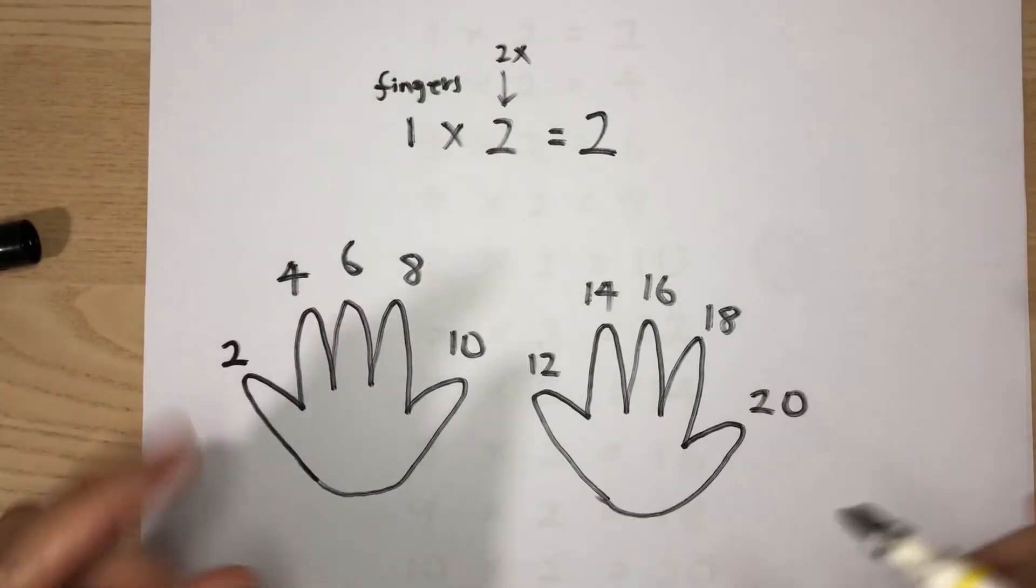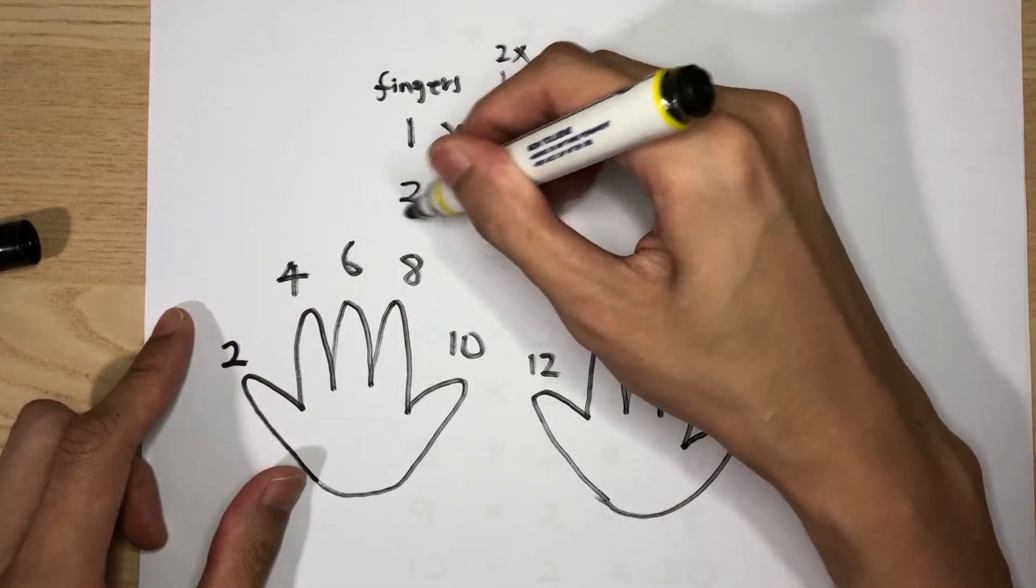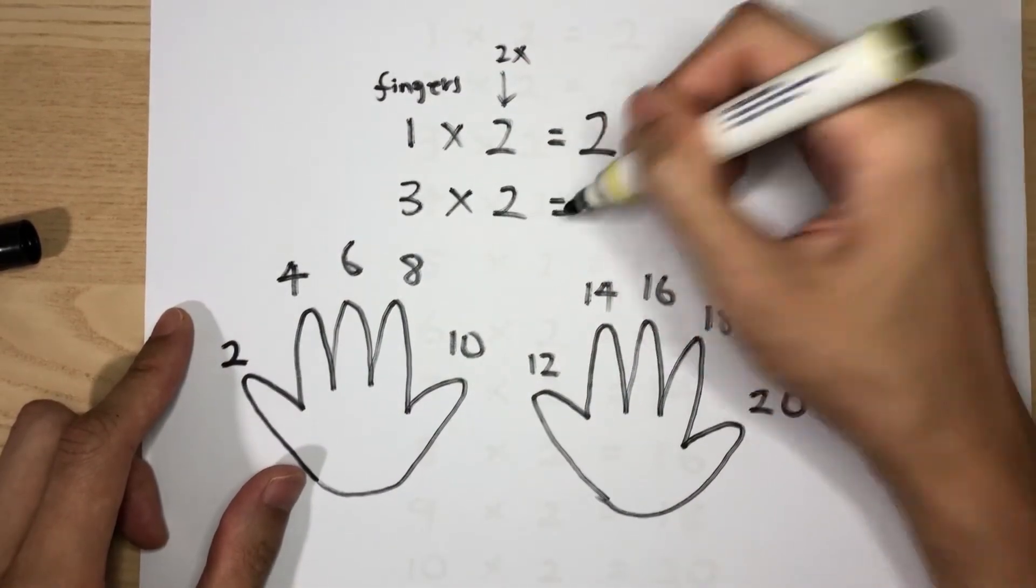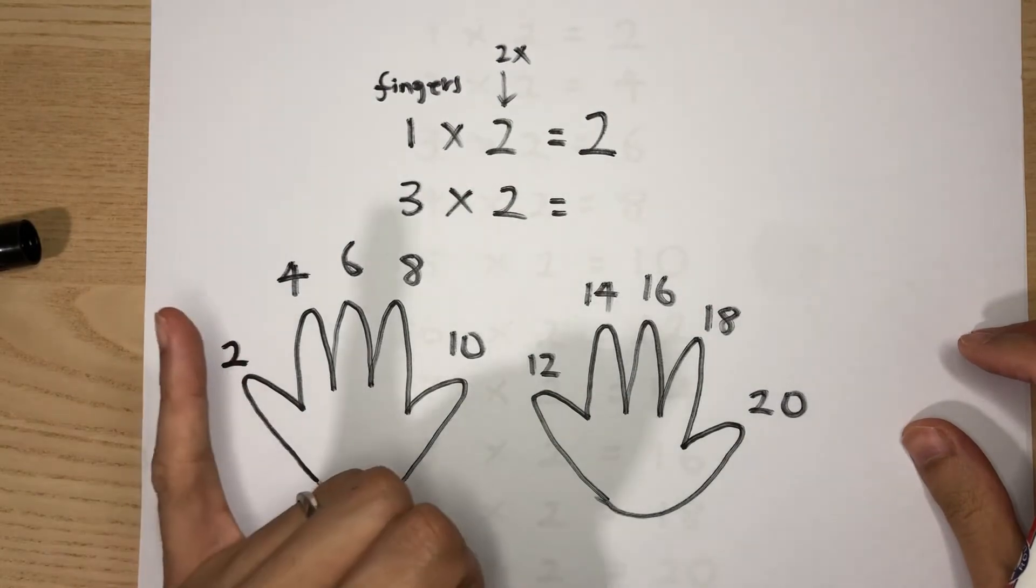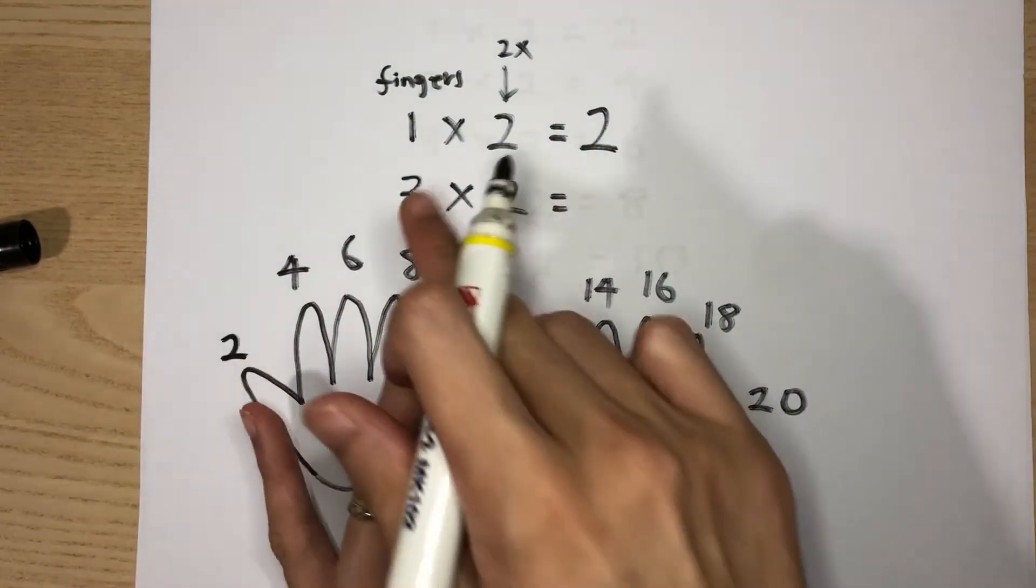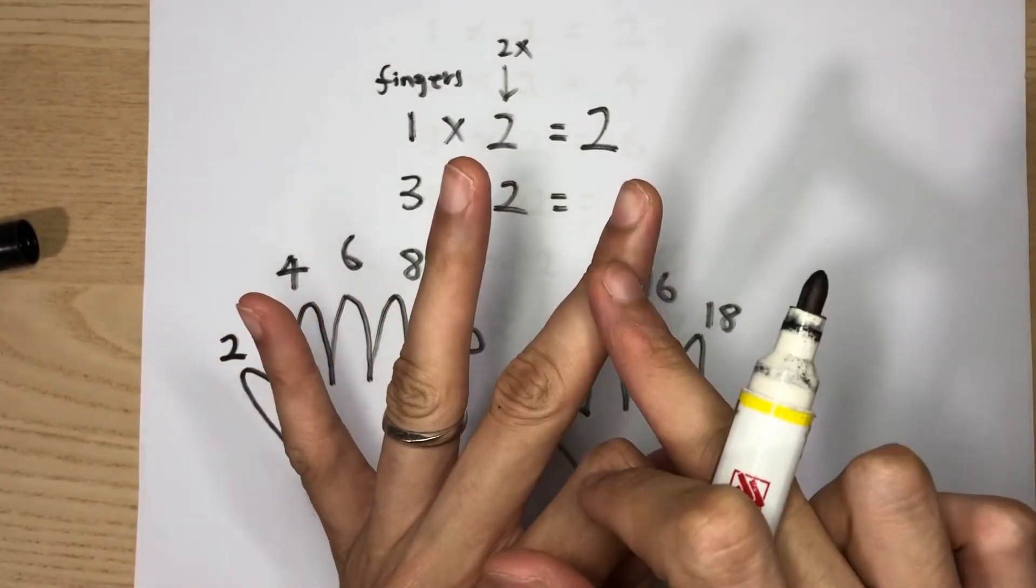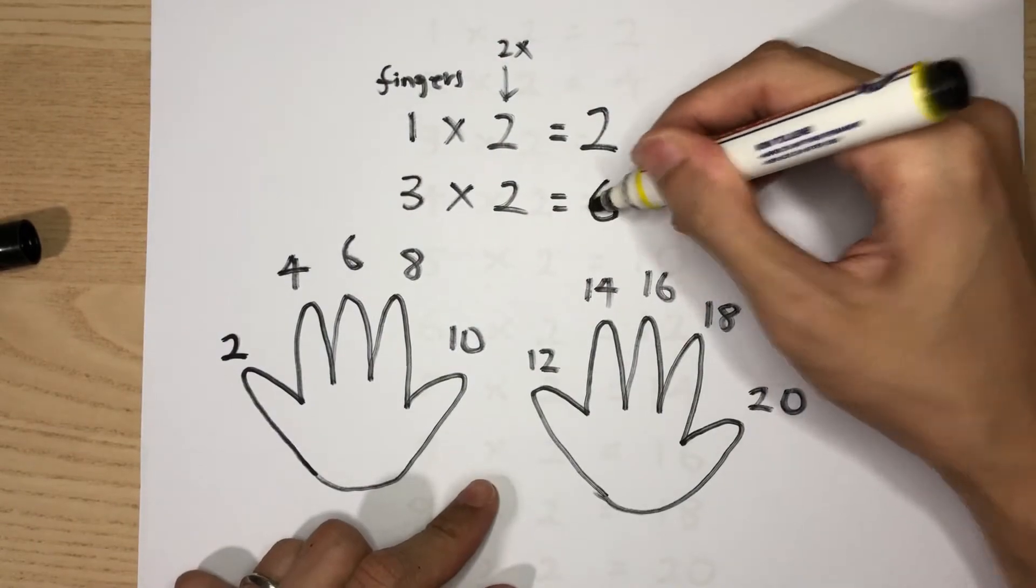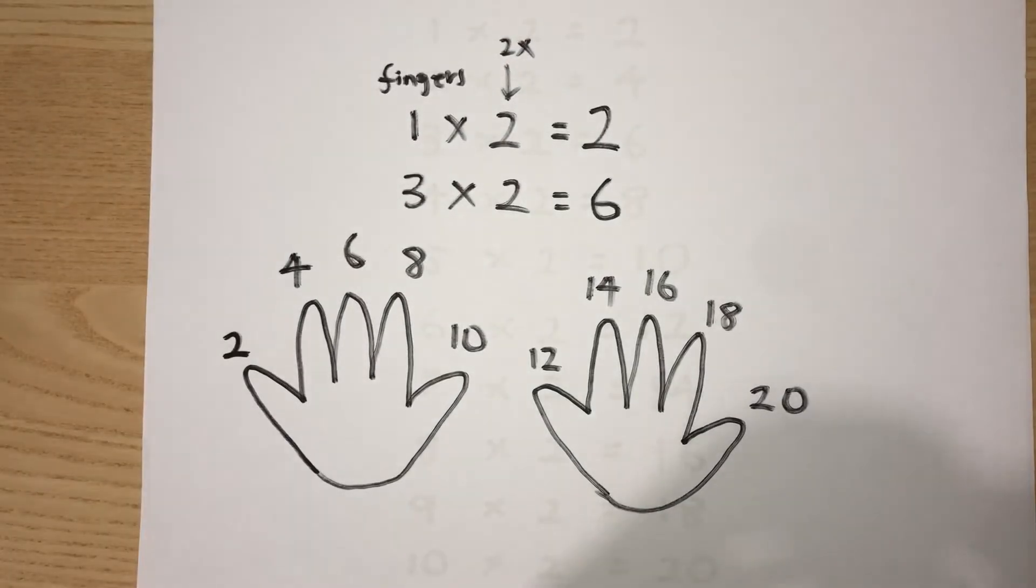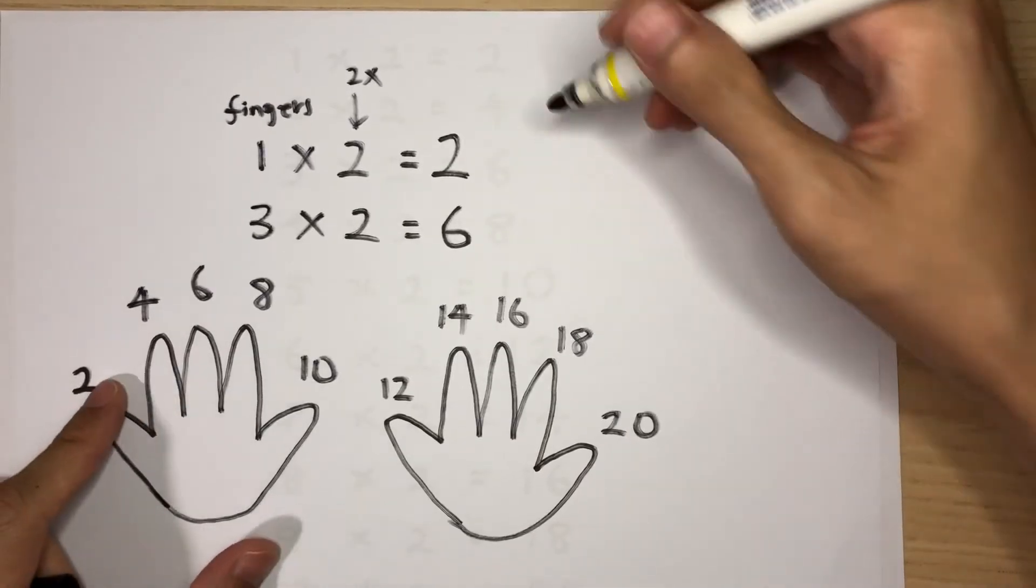Now let's try another example. Let's try three times two. How do you do that? Two, four, six. See, three fingers—one, two, three times two. Two, four, six. So the answer is six.